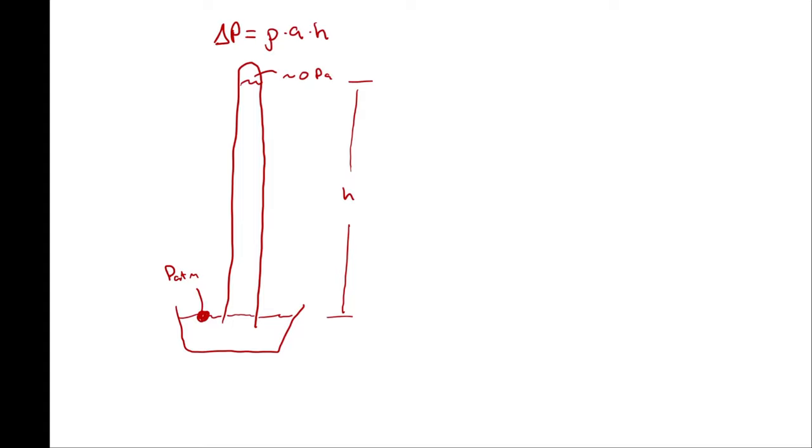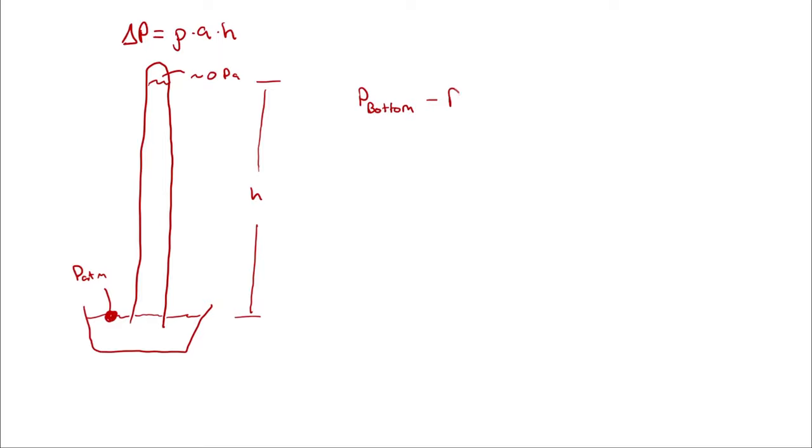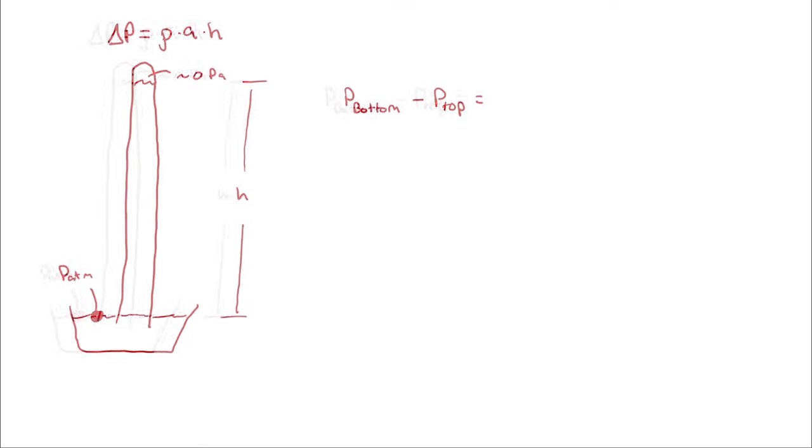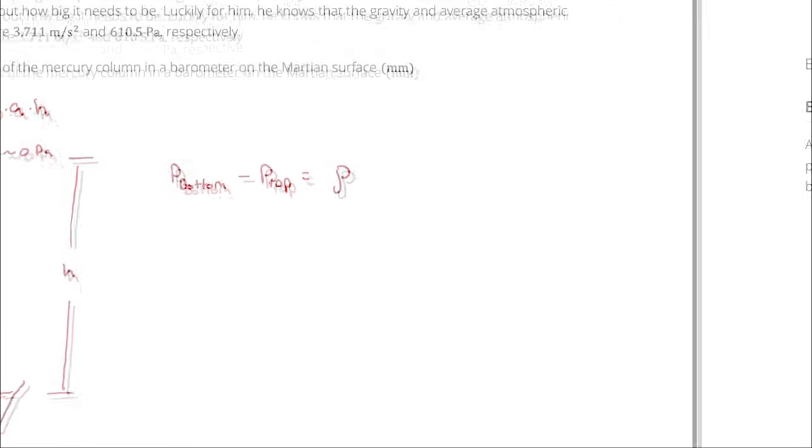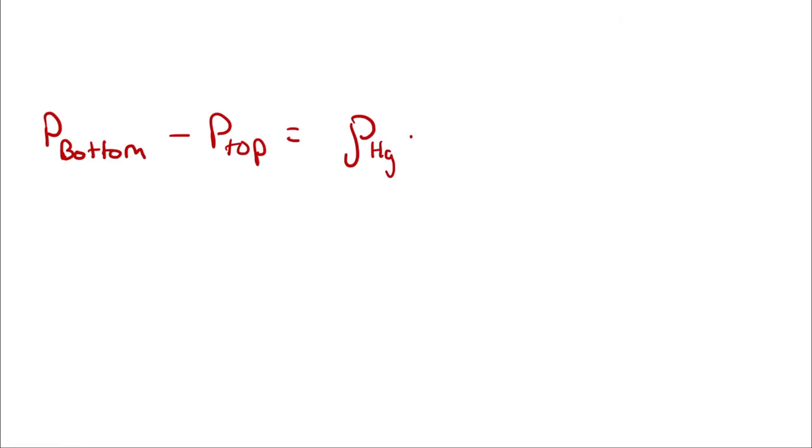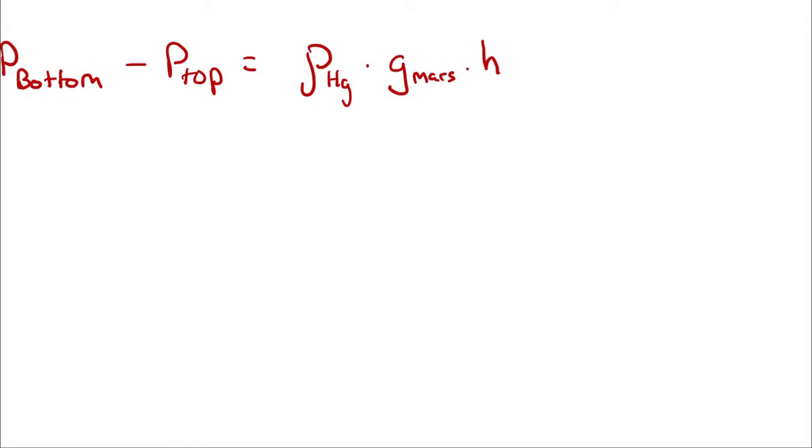So we are saying P bottom of the barometer minus P top is equal to the density of this barometer's fluid, which is going to be a mercury column. So the density of mercury times the acceleration experienced, which is going to be the gravitational acceleration on Mars, multiplied by the height of this column, which is what we're actually solving for.